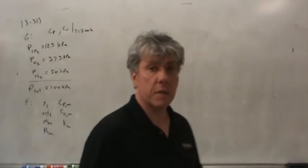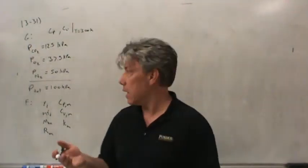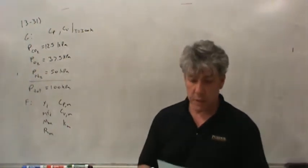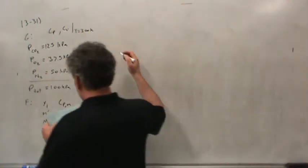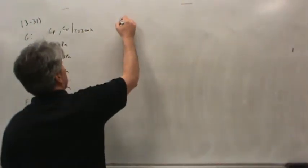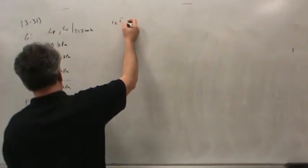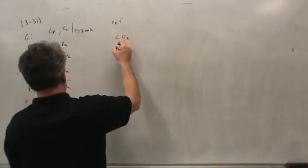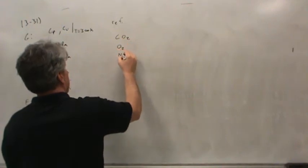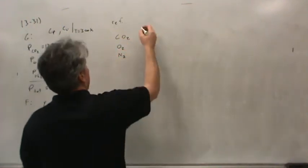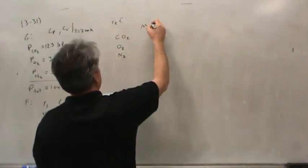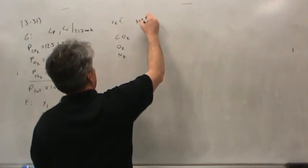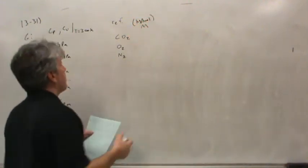Each of the subscript i's refers to a particular species, and there are three species here. The reference table I'm going to use — for carbon dioxide, oxygen, and nitrogen — I'm going to need the molecular weight in kilograms per kilomole, because we're working in metric units.